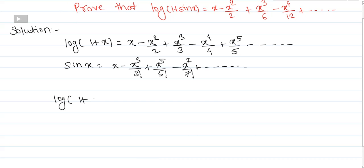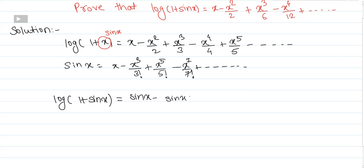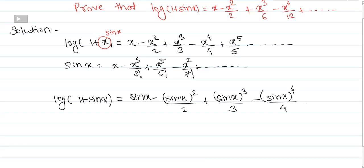Now we have to show that log(1 + sin x) equals — in the expansion of log(1 + x), instead of x we substitute sin x. What we get is: sin x minus (sin x) squared by 2 plus (sin x) cubed by 3 minus (sin x) raised to 4 by 4, up to infinity.